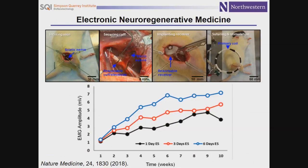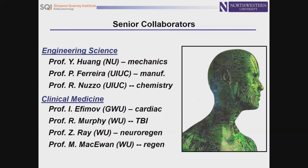These are some examples of the kinds of results we've been able to obtain. This shows electrical stimulation over a period of time demonstrating the enhanced therapeutic benefit enabled by this bioresorbable stimulator, activated over a period of days following the surgical operation to repair the damaged sciatic nerve. This looks very promising — maybe a first example of a neuroregenerative electronic medicine, as a complement to what's possible with pharmaceutical approaches. We were able to convince the editors of Nature Medicine that this is, in fact, a new type of medicine — a new way to think about medicine.